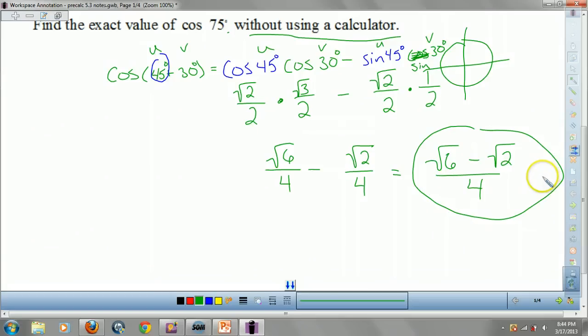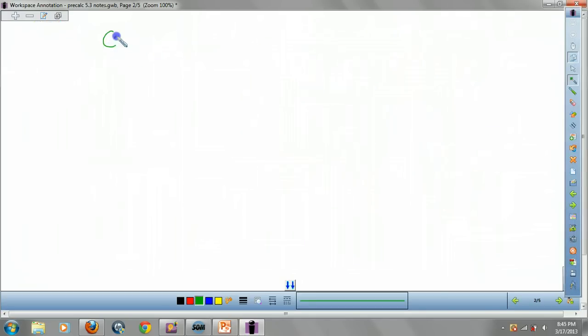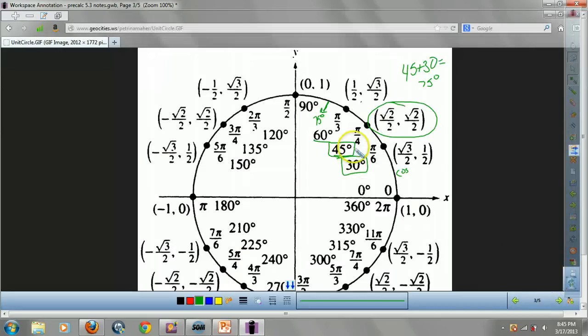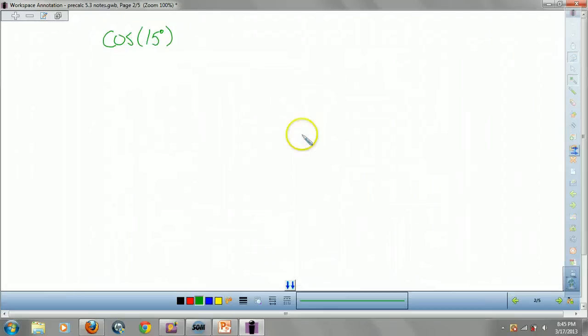You guys want to try another one for fun? Let's find cosine of 15 degrees. This is really common. Well, now we got to think about how do we get to 15. Well, about 45 minus 30. That's 15. Because we got to use these ones, guys. We got to use the ones we know. So that's equal to cosine of 45 minus 30, right?